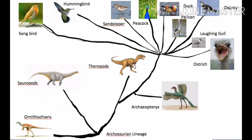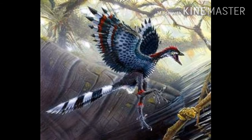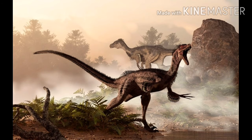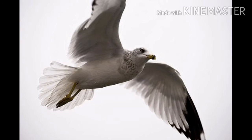Birds use feathers for flight with the conversion of forelimbs into wings, supported with feathers. In birds, the forelimbs were converted into wings, and feathers helped them in flight. The presence of feathers in birds and in some dinosaurs suggests that birds are closely related to reptiles. Since dinosaurs were reptiles, it proves that birds are closely related to reptiles. This provides an example of step-by-step gradual evolution.